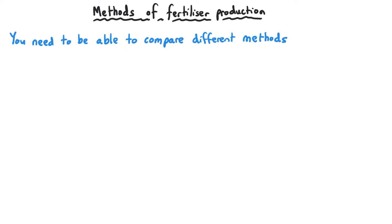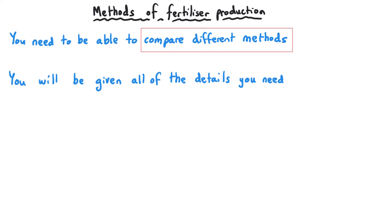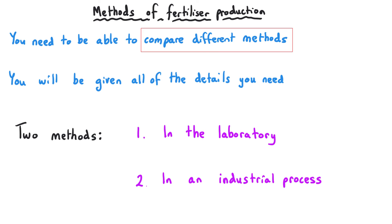In an exam situation, you could be asked to compare the different methods of producing a particular fertiliser. When you do this, you aren't expected to bring specific prior knowledge — you'll be given everything you need and your job will be to make sense of the details provided. The two methods you could be asked to compare are producing a fertiliser in the laboratory or producing it as part of an industrial process.